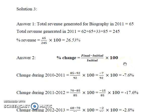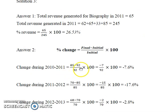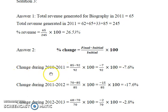So let's apply this to our data. First we calculate the percentage change in the sales revenue of business books during 2010-2011. Looking at the table, we have an initial sales revenue of 92 lakhs and a final sales revenue of 85 lakhs. So we have final minus initial — 85 minus 92 — divided by the initial value 92, and then multiplied by 100 to get the percentage. The negative sign indicates a drop in our final value. So during 2010-2011, a drop of 7.6 percent was observed in the sales revenue of business books.